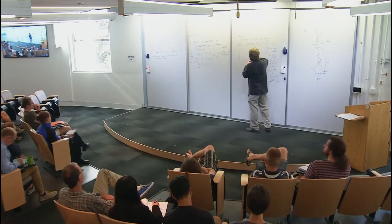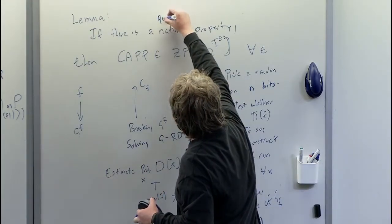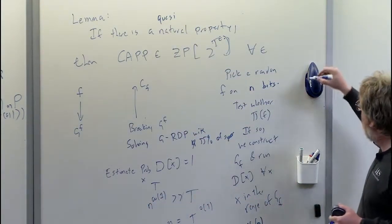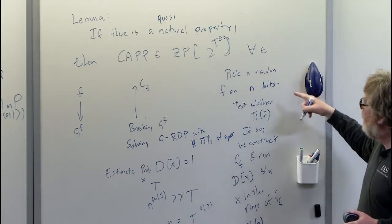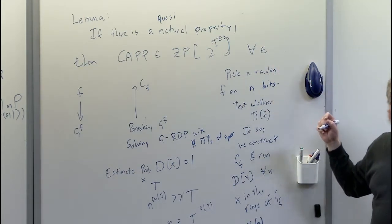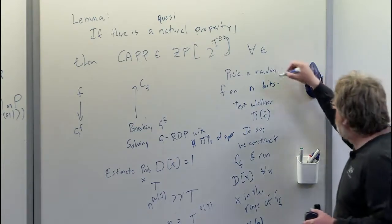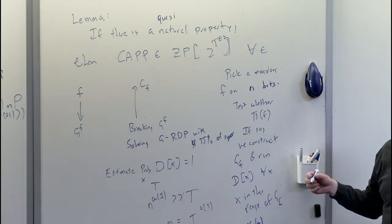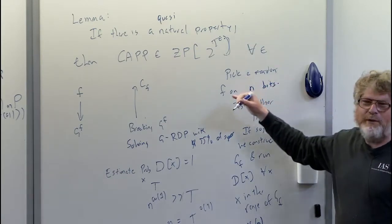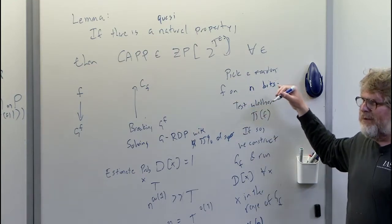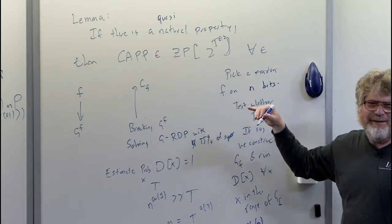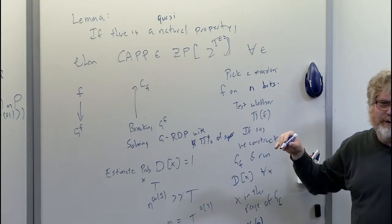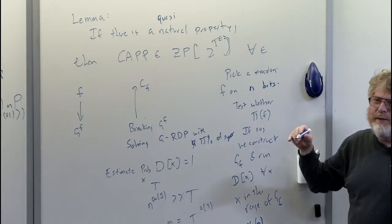What if there's a quasi-natural property — what do we have to change in the algorithm description? We have to eliminate the word 'random,' because a random function won't have the property now. How can we pick something non-randomly when there are just few solutions? We have to change the model of computation: instead of picking randomly, we pick non-deterministically.